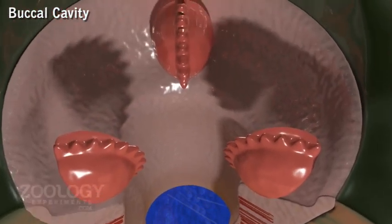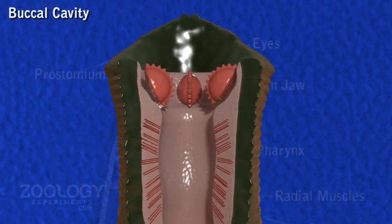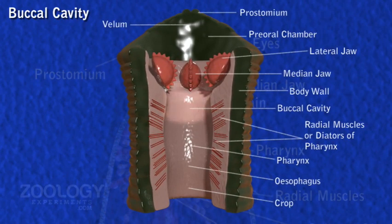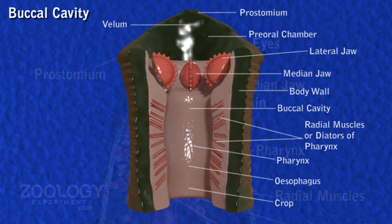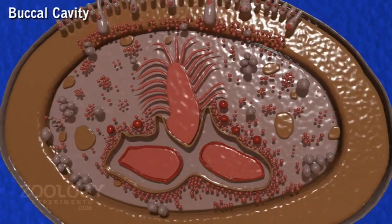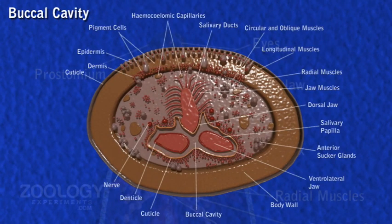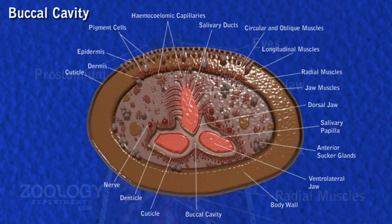The buccal cavity follows the mouth, which is a short chamber behind the vellum. In its mucous lining are embedded three chitinous jaws arranged in a triangle. Each jaw is a laterally compressed muscular cushion covered with a fine cuticle, which is thickened at the free edge to form a ridge bearing minute teeth in a single row. Such jaws are termed monostychodont. They produce the characteristic triradian bite or Y-shaped wound in the skin of the host.